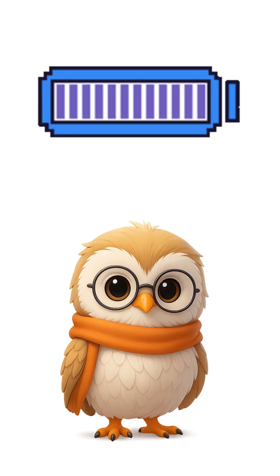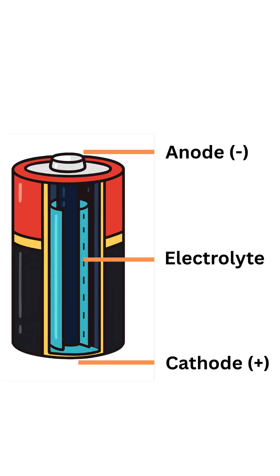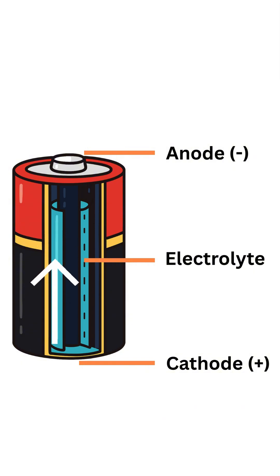Batteries store energy in the form of chemical potential, which gets converted into electrical energy when the circuit is closed. Each battery has two electrodes, called the anode and the cathode, separated by an electrolyte that allows ions to move but blocks electrons.